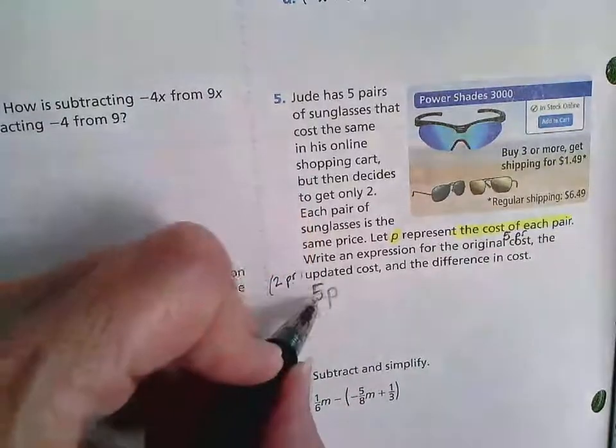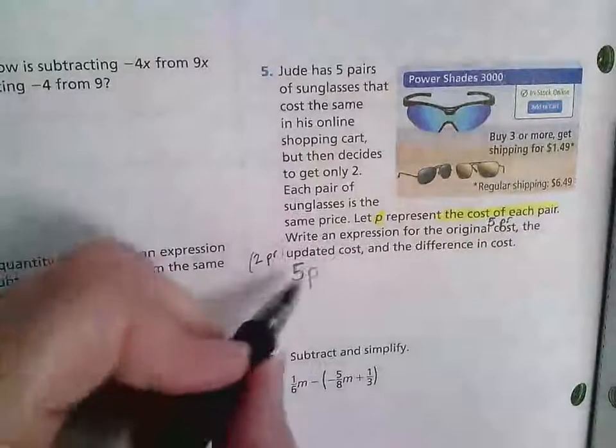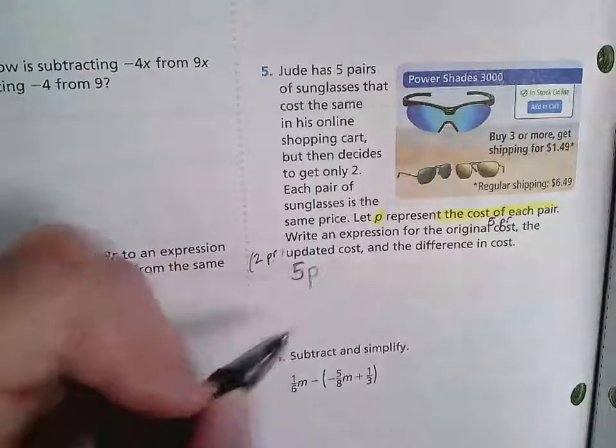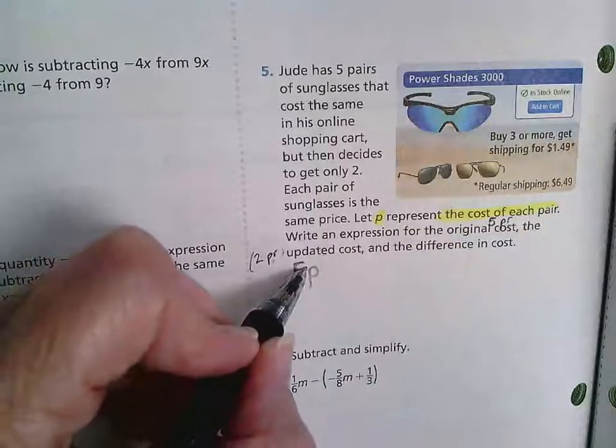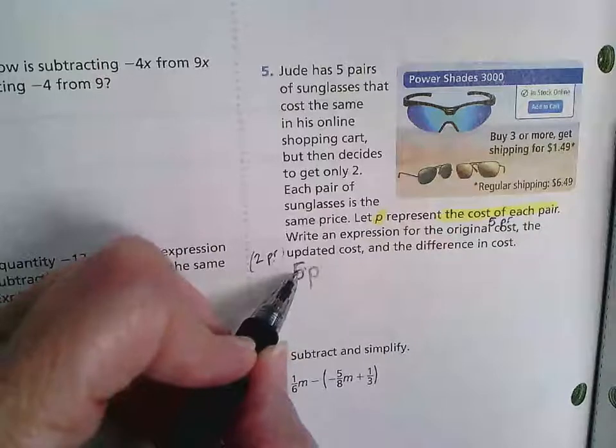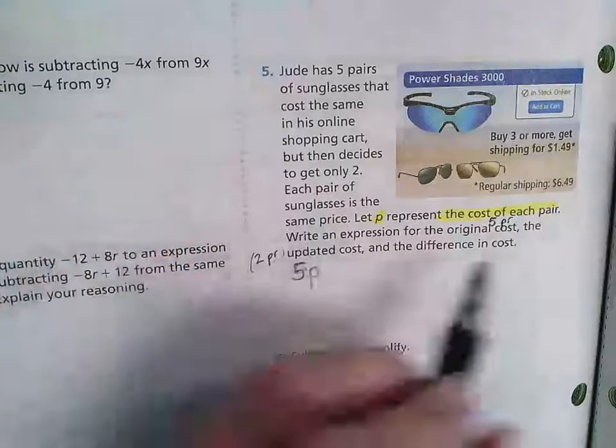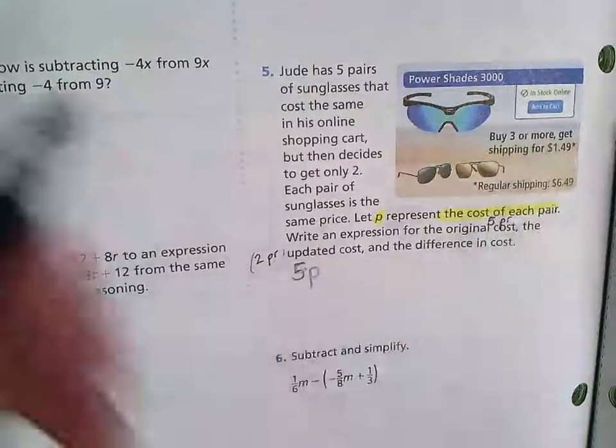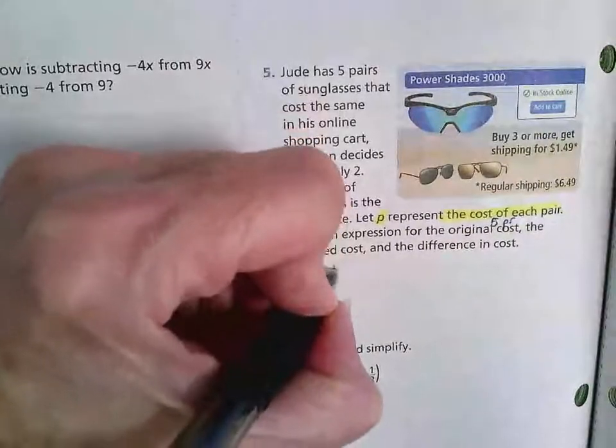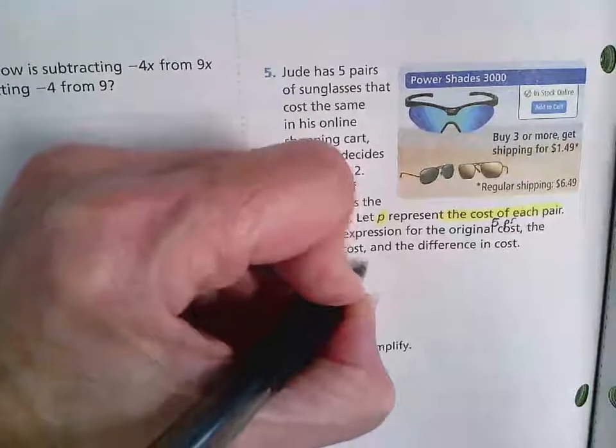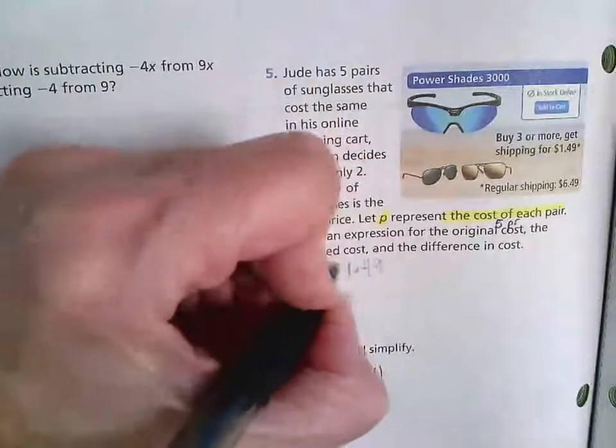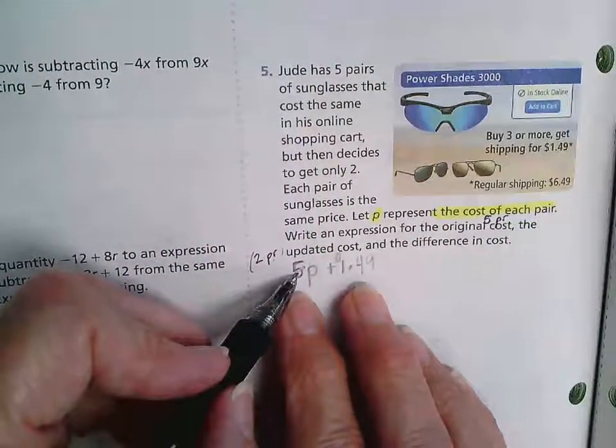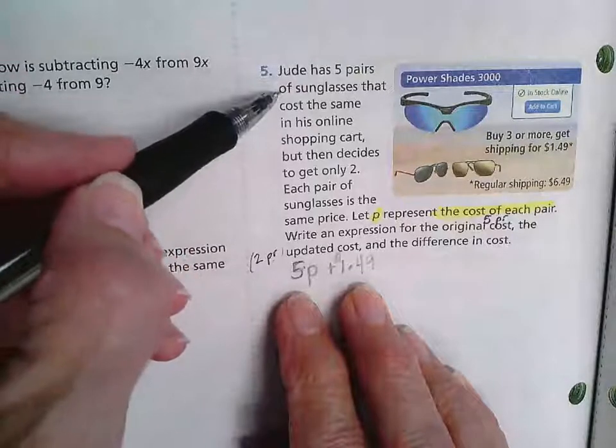So this is a multiplication problem. When you see a number in front of a letter called a variable, that means that whatever this value is, you're going to multiply it by five. Now remember, if he was going to buy three or more, he would get shipping for $1.49. So he's going to have to pay that cost as well. So this expression represents the cost when he is going to get five pairs of sunglasses.